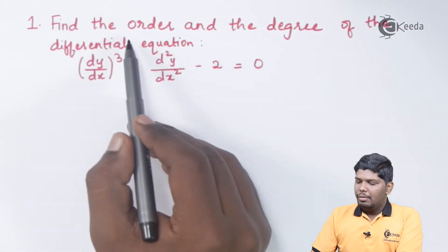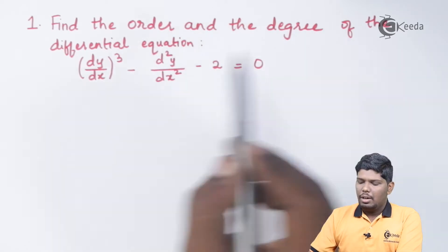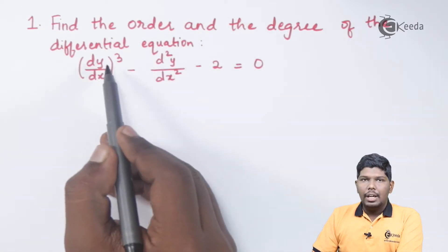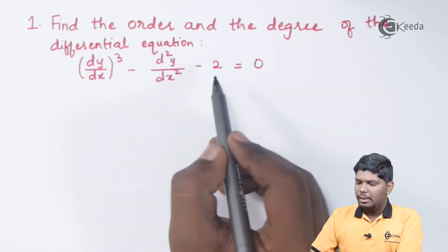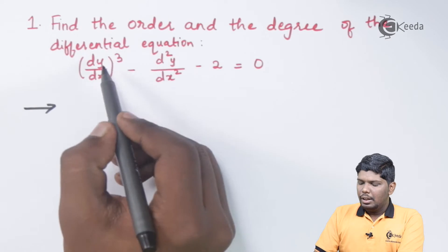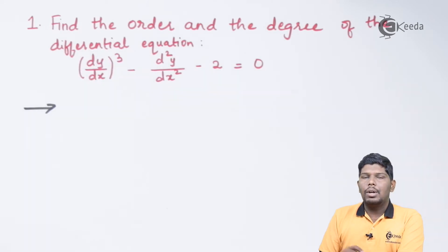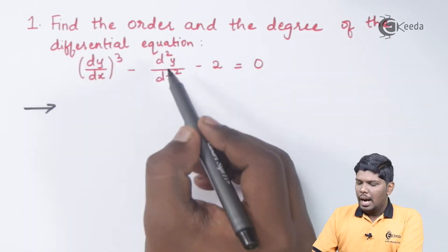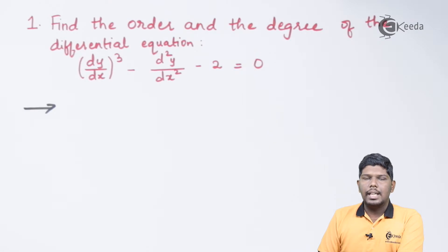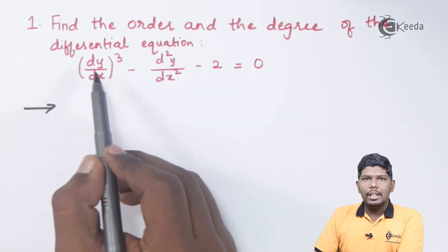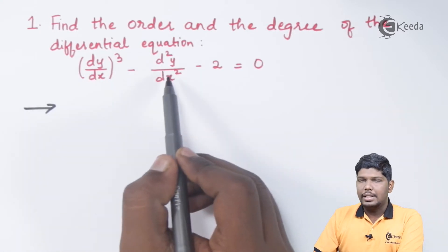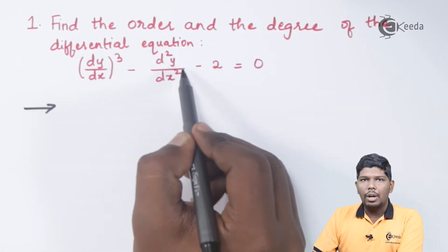In the first example, we have to find the order and degree of the differential equation (dy/dx)³ - d²y/dx² - 2 = 0. The first term dy/dx is the first order derivative, and d²y/dx² is the second order derivative. Whenever you are asked to find order and degree, first find the order and then its power is the degree. The highest order will be 2.